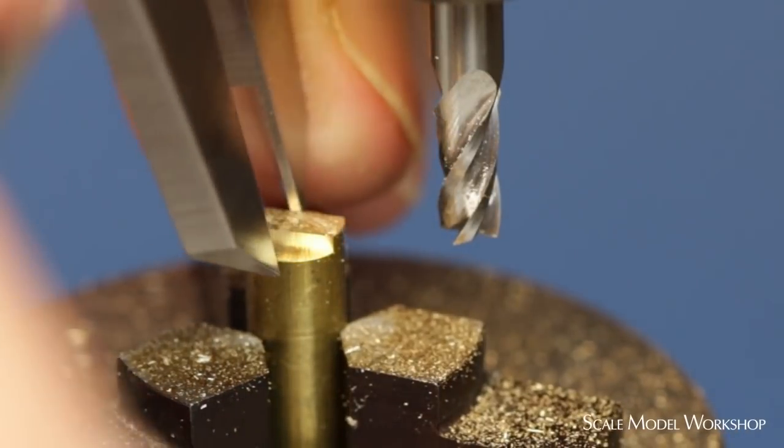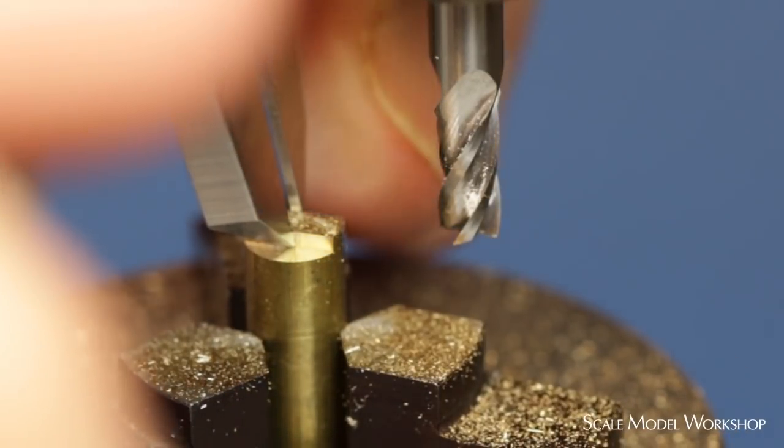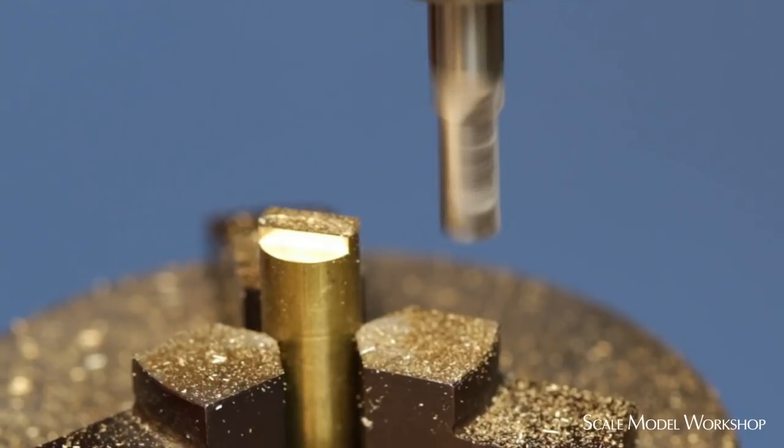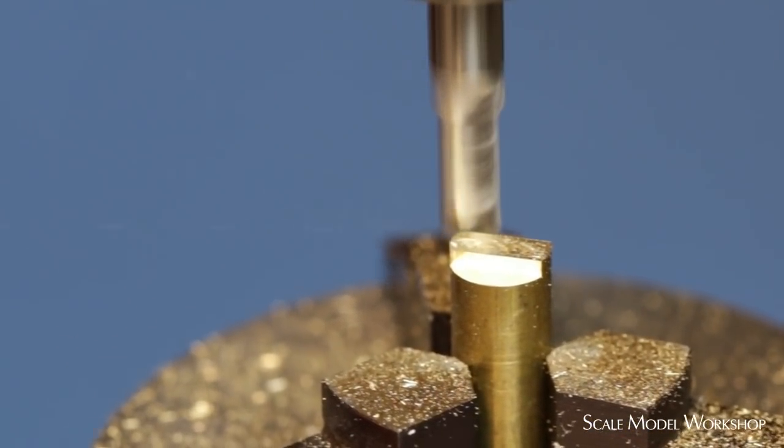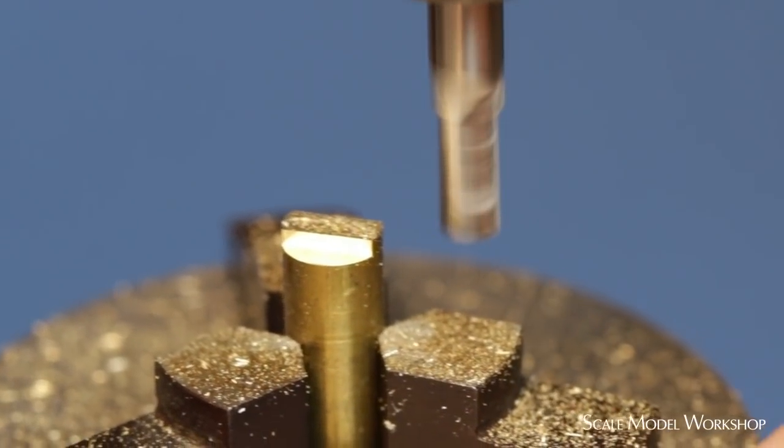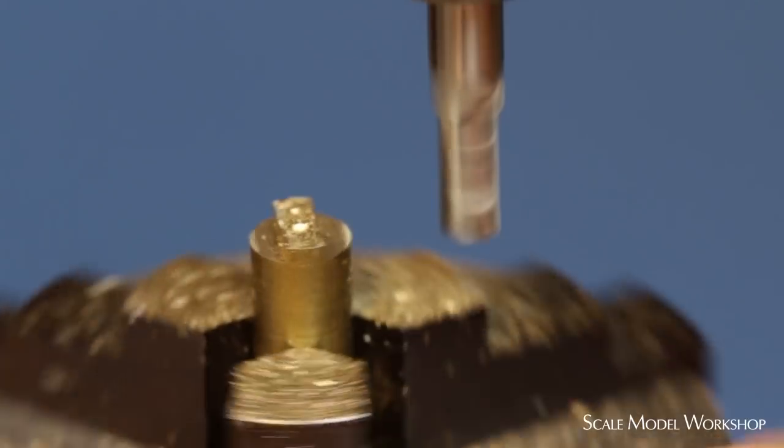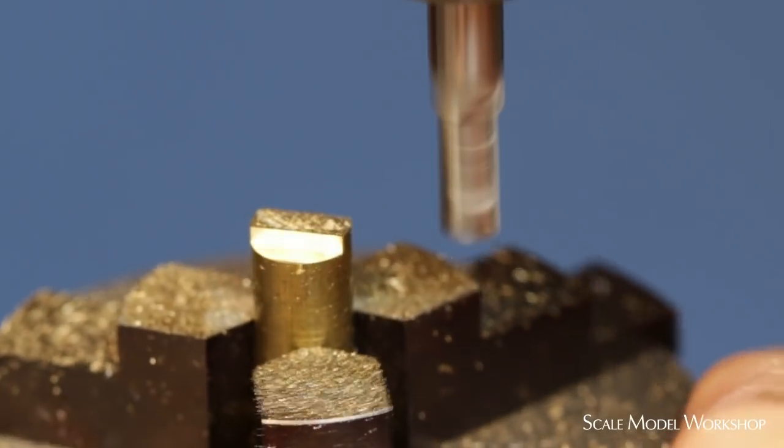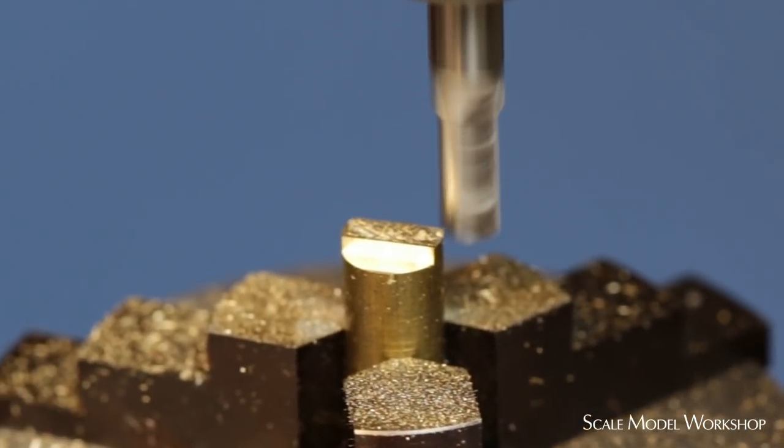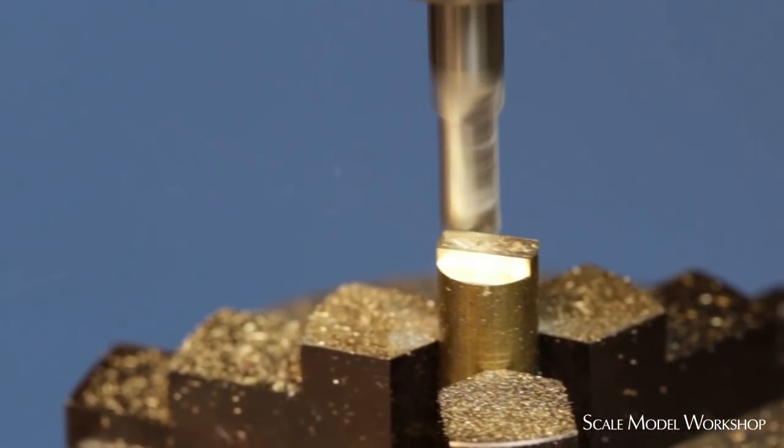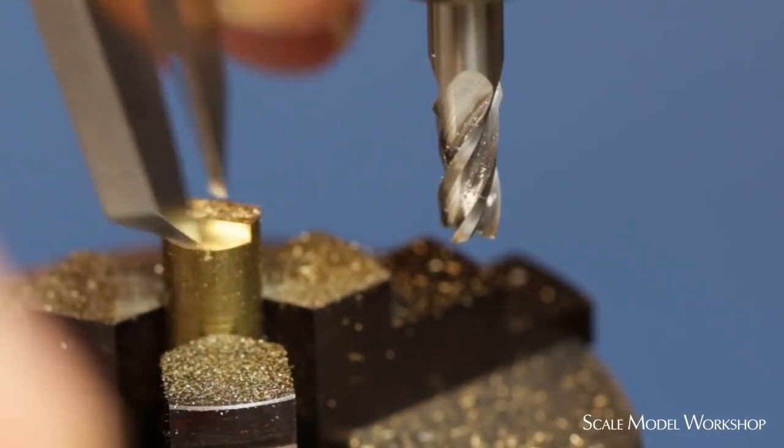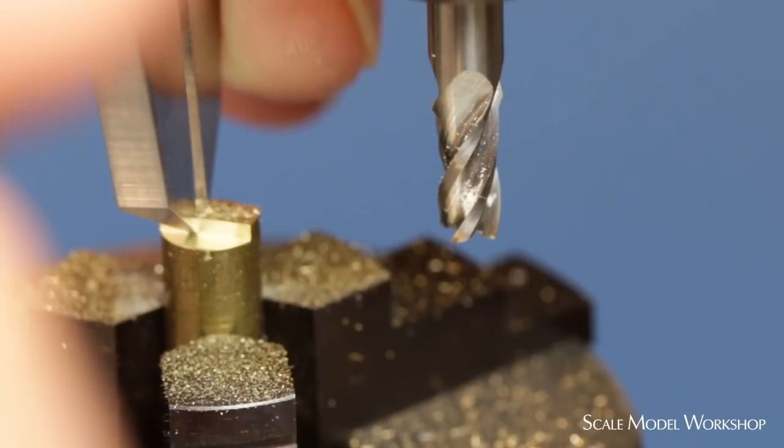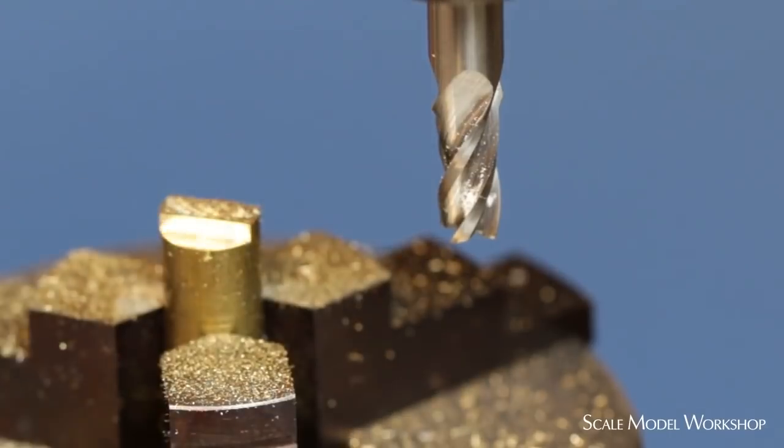I check the width so I can gauge how much more material I need to remove. The result is a perfectly centered rectangle with the width equal to the finished blister.